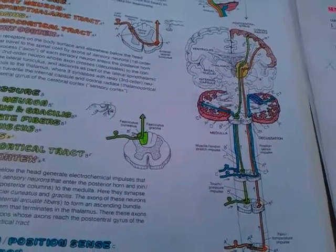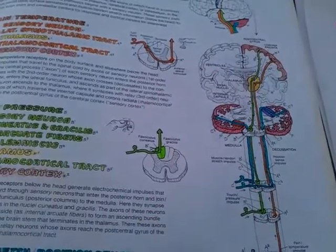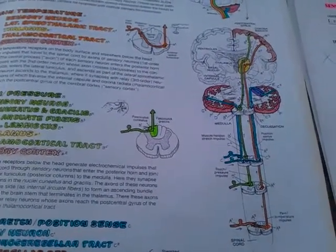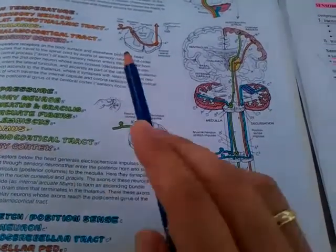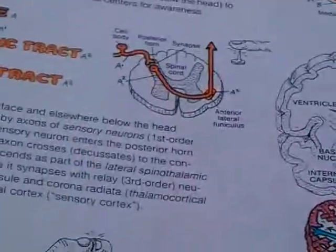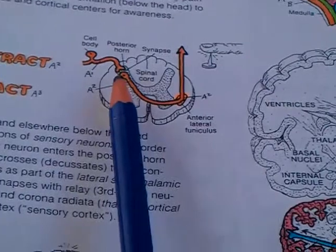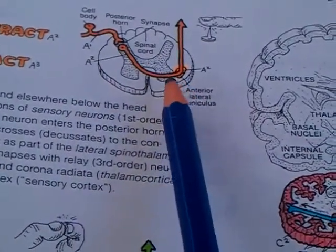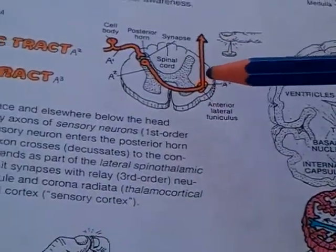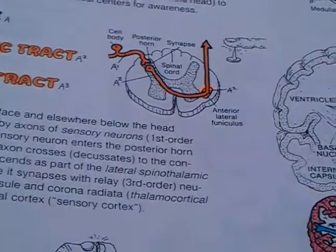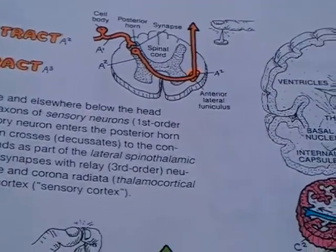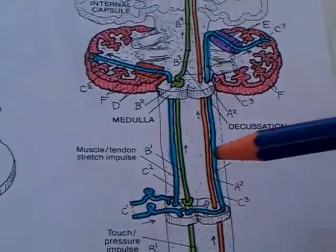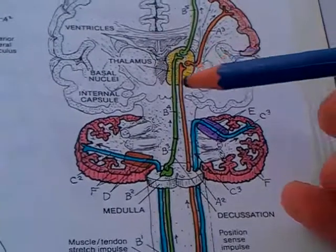First, we have the spinothalamic tract, represented in orange. It begins in nucleus propius in the gray matter of the spinal cord, then crosses to the opposite side and ascends upwards through the spinothalamic tract, terminating in the lateral group of the thalamus.